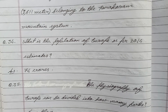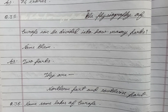Question 34: What is the population of Europe as per 2014 estimates? Answer: 74 crores. Question 35: The physiography of Europe can be divided into how many parts? Name them. Answer: Two parts — the northern part and the southern part.